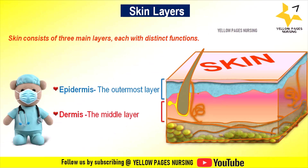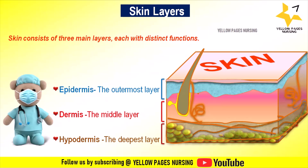The middle layer is called the dermis. The dermis's main function is housing blood vessels, hair follicles, and glands, giving the skin its strength and elasticity. The next layer is the hypodermis, that is the subcutaneous layer — it is the deepest layer, composed of fat and connective tissue, which insulates the body and cushions internal organs. Together these layers work to protect the body, regulate temperature, and provide sensory information.